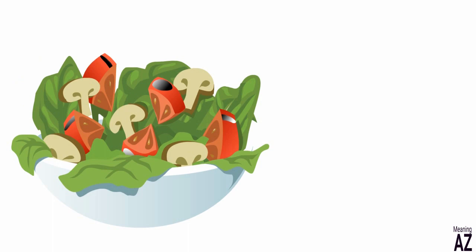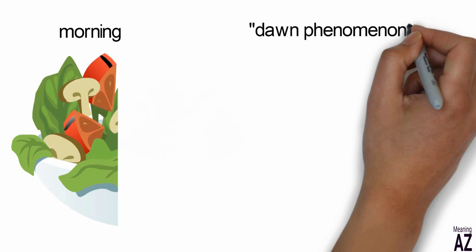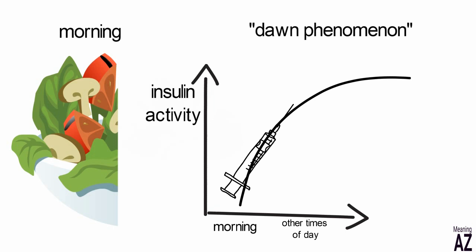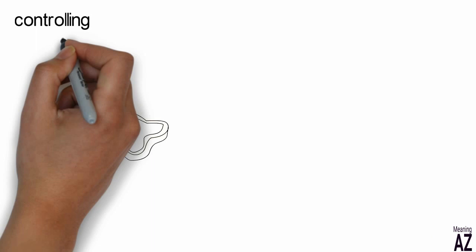The reason he recommends eating less carbohydrates in the morning is the dawn phenomenon. The dawn effect describes the increased deactivation of insulin by the liver in the morning compared to other times of the day. As a result of this phenomenon, insulin activity is lower in the morning.